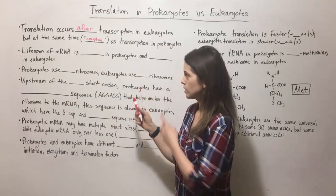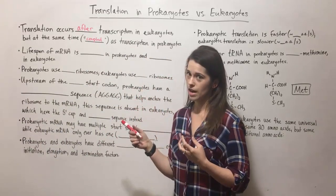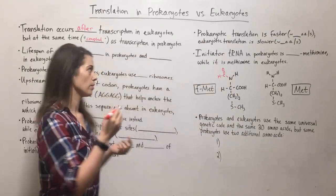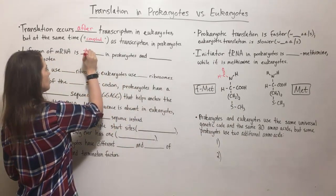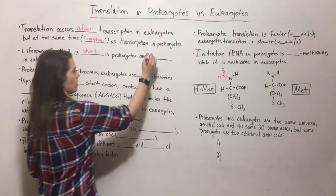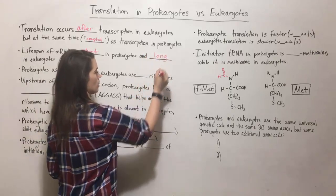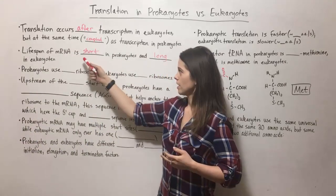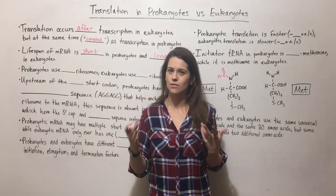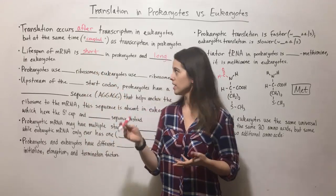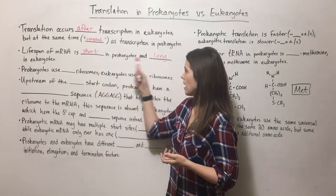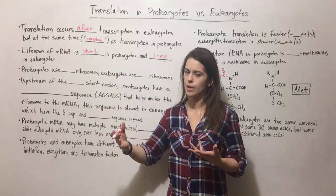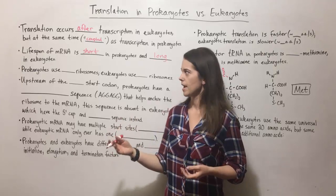The lifespan of the mRNA transcript is quite short in prokaryotes and much longer in eukaryotes. With prokaryotes their mRNA usually only lasts a few seconds or maybe a few minutes, whereas with eukaryotes the mRNA lasts a much longer amount of time — we're talking hours or even days.